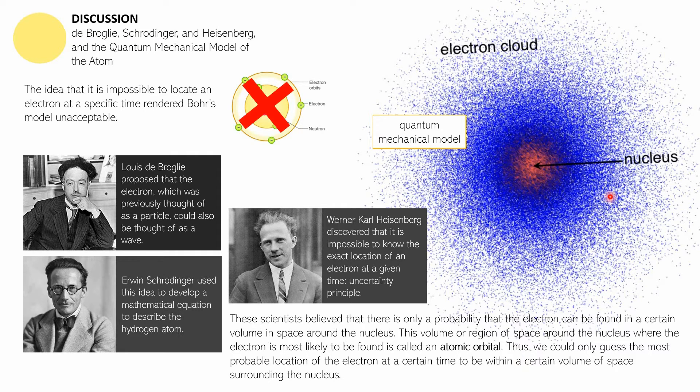So you can't really point out if the electron is really moving with respect to one orbit, but we can conclude that the electron is moving around a particular space—not an orbit but a particular region. This volume or region of space around the nucleus where the electron is most likely to be found is called an atomic orbital. An orbital is a region of space, a volume of space. Thus we can only guess the most probable location of the electron at a certain time.